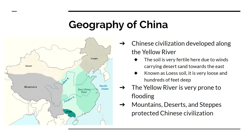It's called loess soil. Basically what happens is wind picks up these sand particles from the desert and deposits them into this warm, moist climate, turning it into extremely fertile soil that's hundreds of feet deep in places. That's a good thing. The bad thing, though, is it's very loose soil. It's very flat, and the Yellow River floods, and those floods aren't always predictable. The river changes course very frequently.